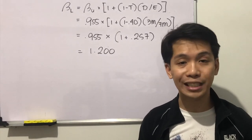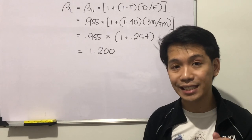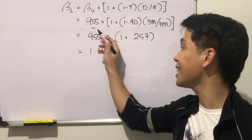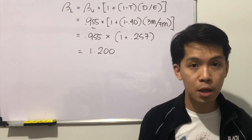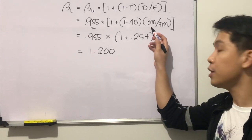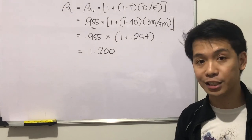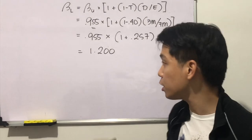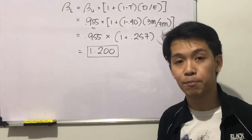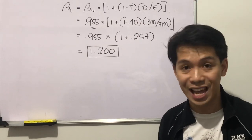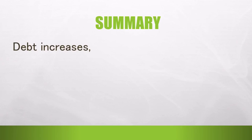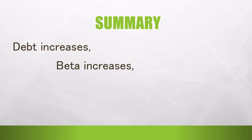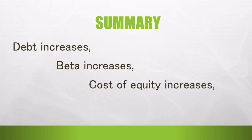Now, if we notice the movement of the beta: if the company is not financed with debt, its beta is 0.955 — the unlevered beta. But if the company is to be financed with 3 million in debt, leaving only 7 million for equity financing, we will have a higher beta of 1.2. Thus, the beta goes up if we use debt in our financing. In summary, if debt increases, beta increases, and the cost of equity increases. This may increase the WACC — or it may not, depending on whether the lower cost of debt relative to equity or the increase in financial risk would prevail.